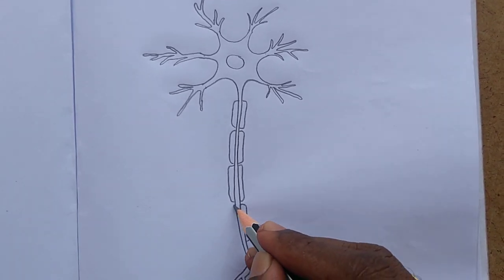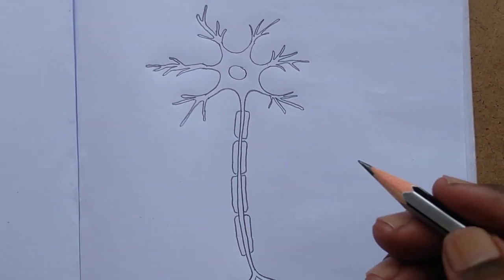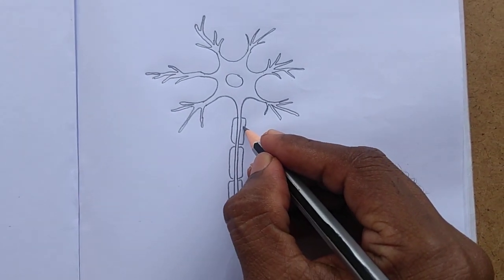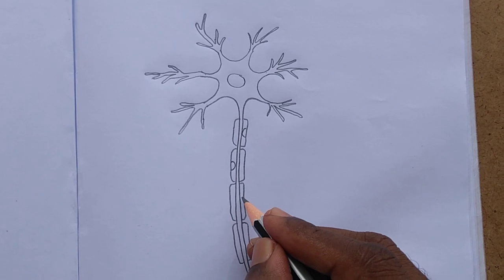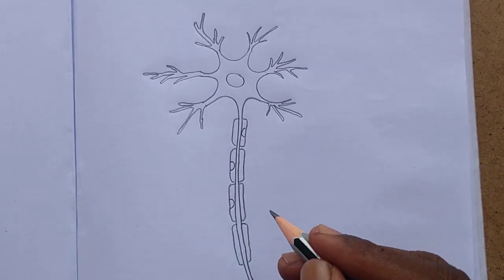So many nodes are there but we are drawing here only four, and on those we have to draw Schwann cells like this.